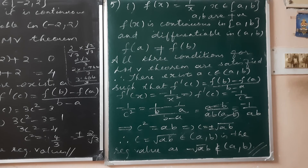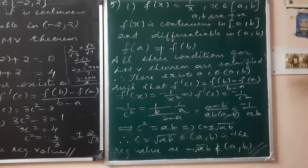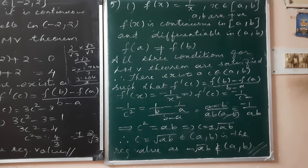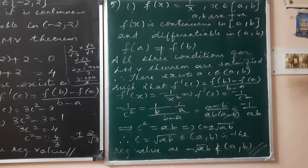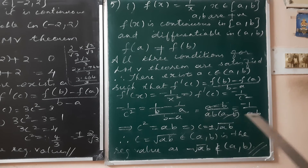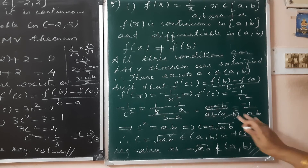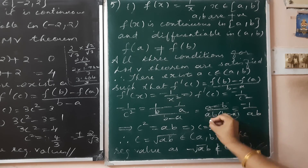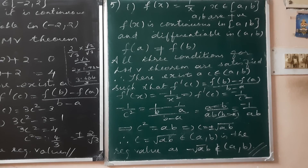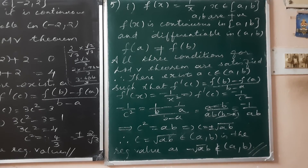Therefore, there exists a c belonging to the open interval (a, b) such that f'(c) equals [f(b) minus f(a)] divided by [b minus a]. Differentiating f(x) = 1/x gives f'(x) = -1/x², so f'(c) = -1/c². The right-hand side simplifies: the numerator [1/b minus 1/a] = (a minus b)/ab, and dividing by (b minus a) gives minus 1/ab.